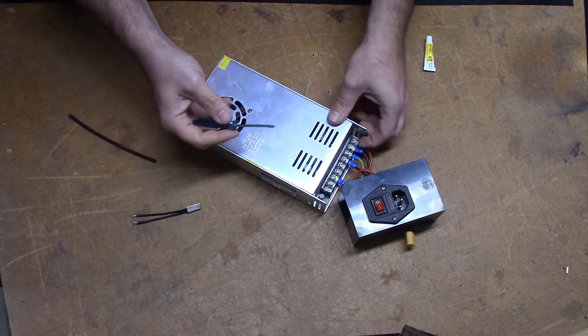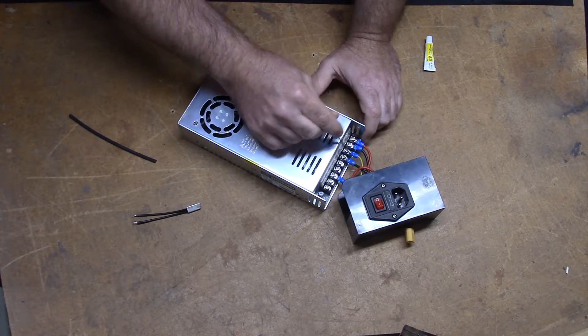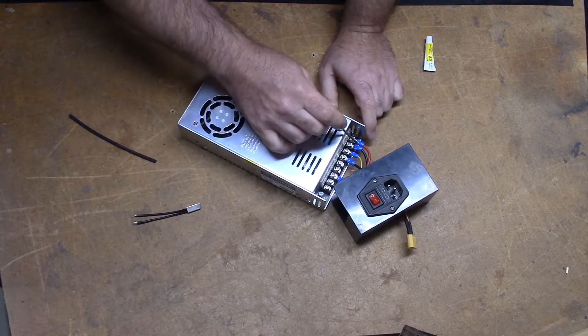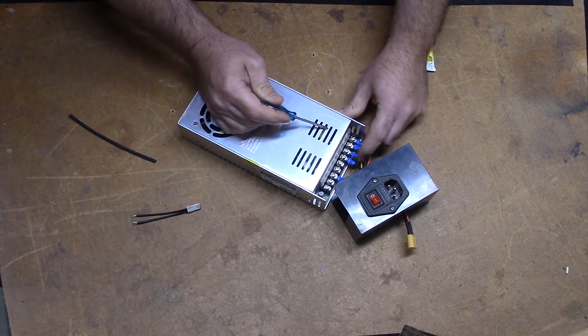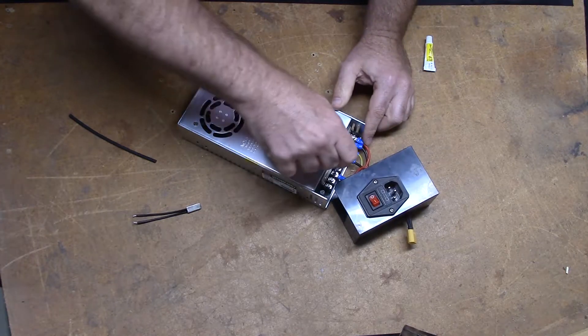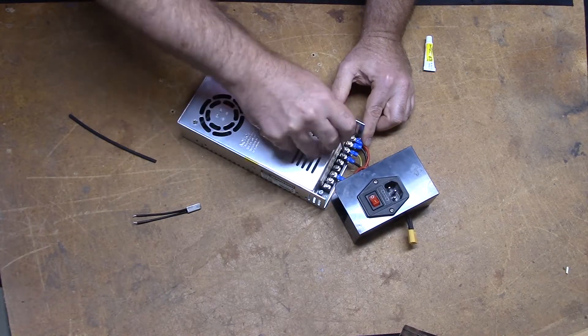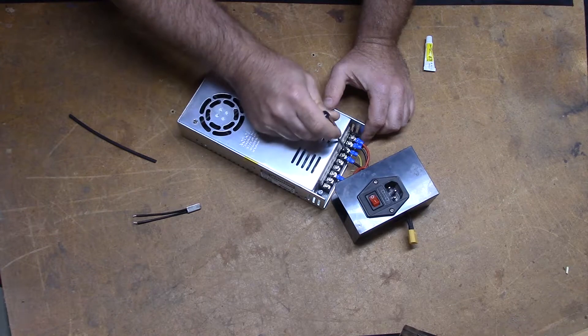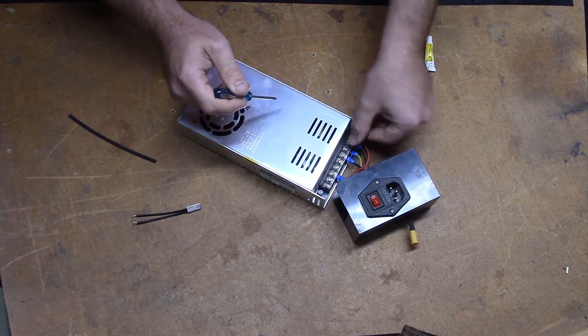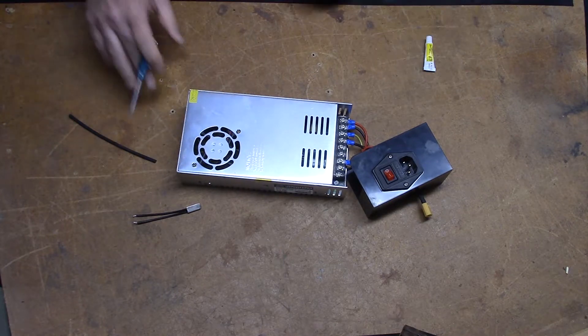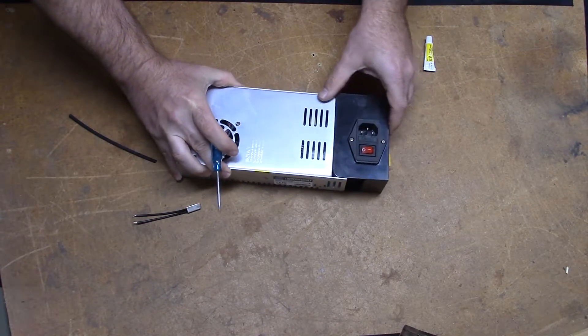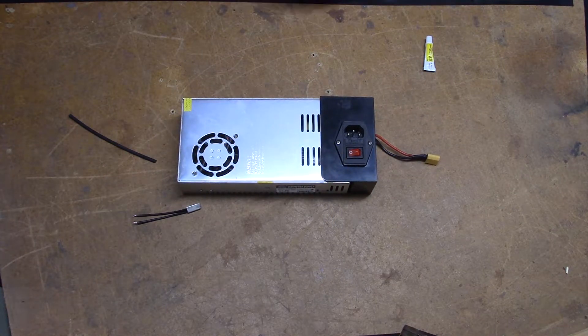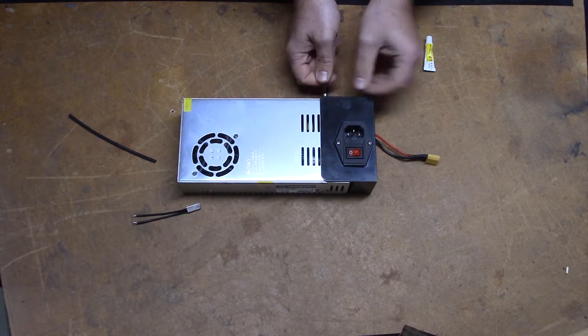One other thing to note is this is where your mains are connected and also the output to the XT60 connector. Just check these connections and make sure they're all tightened up and snug. Give them a quick twist with the screwdriver to make sure everything is tight. If one of these mains connections gets a little loose it could arc and cause smoke or a fire or burn up your power supply, so it's always good to check those connections every once in a while.